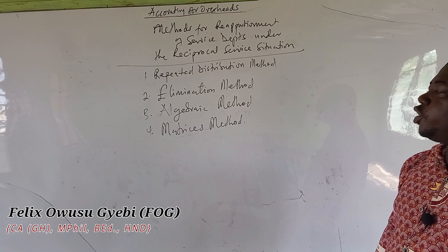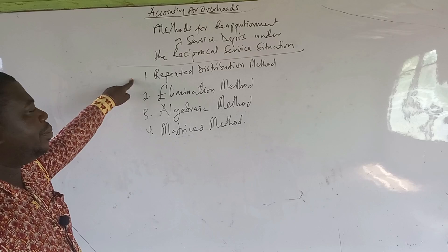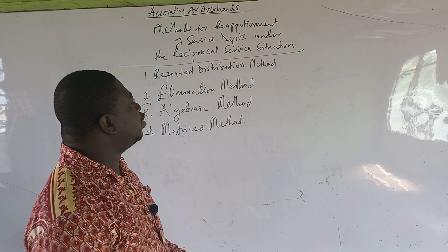We do that mathematically and then we can even have the matrices method. So these are four methods we can use to do the reapportionment of service departments in a situation where they perform reciprocal services. We are going to begin with the repeated distribution method and then later look at the elimination method.